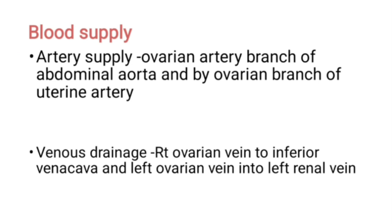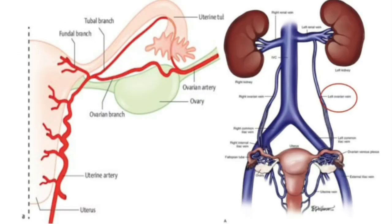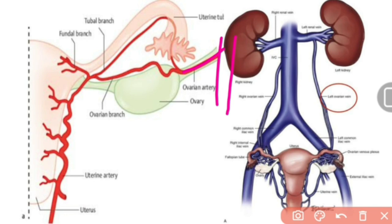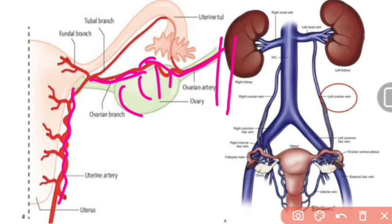Venous drainage: the right ovarian vein drains directly into the inferior vena cava, while the left ovarian vein first drains into the left renal vein, which then drains into the inferior vena cava. The ovarian artery is a direct branch of the abdominal aorta, and the ovarian branch of the uterine artery makes anastomosis to supply the ovary.